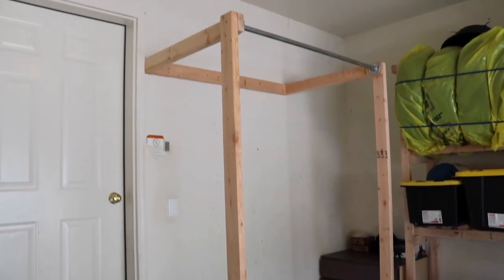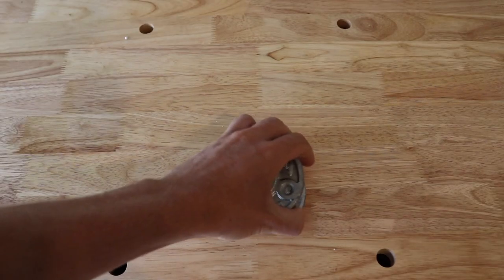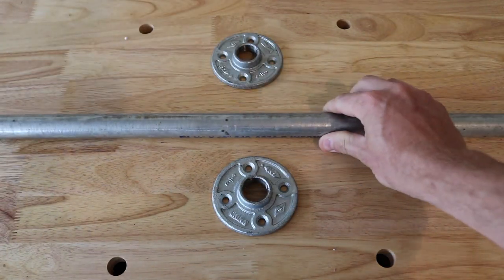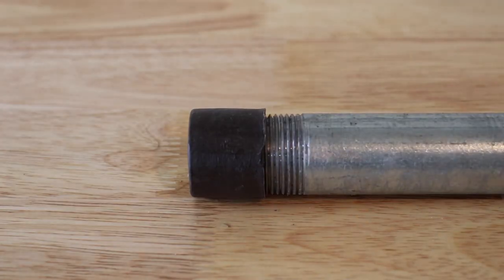In this video, I'll show you how I built a super simple, sturdy pull-up bar. You'll need two flanges and a threaded pipe. I chose one that was 48 inches long.